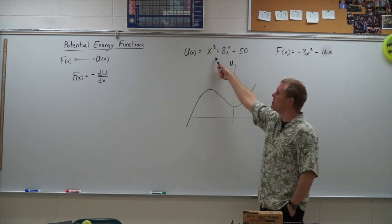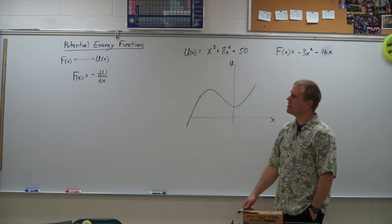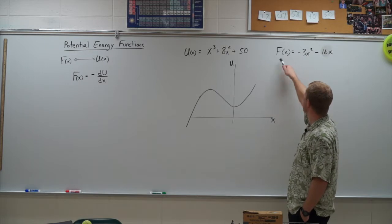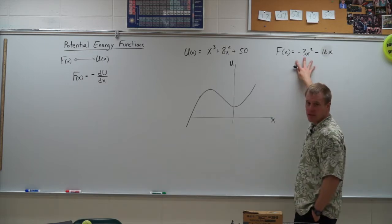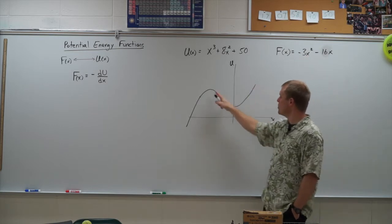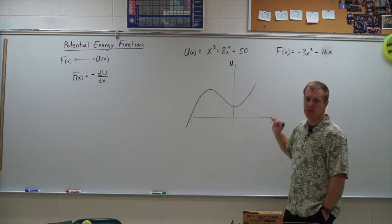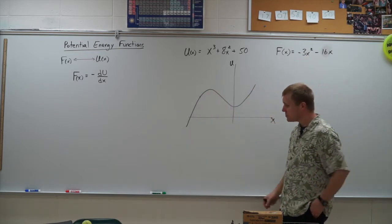So here is my force function. Again, here I'm using x in meters, potential energies in joules then, and force in newtons, x in meters as well. So this is my force function. This is telling me how the force or how the negative of the slope of this graph looks.